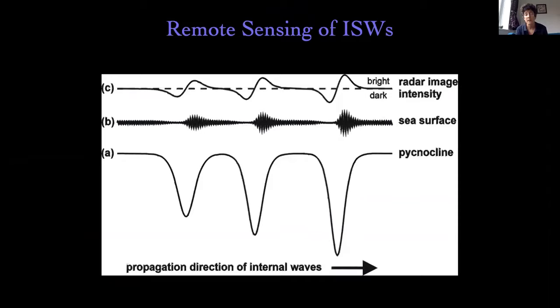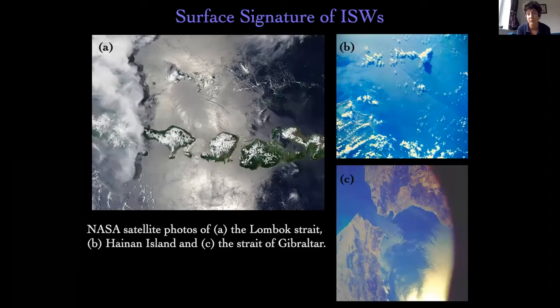As the pycnocline is disturbed by an internal wave, it induces a current at the surface, giving rise to regions of rough and slack water — we get convergence and divergence in the velocity field. If the climatic conditions are right — not much wind, the sun at the right angle — this can be picked up using satellite and radar imagery. Here are some examples from NASA's website: satellite images of the Lombok Strait off Indonesia, the South China Sea, and the Strait of Gibraltar. In all of these images you can see light and dark bands — what we're looking at is a surface disturbance due to internal wave motion going on subsurface.